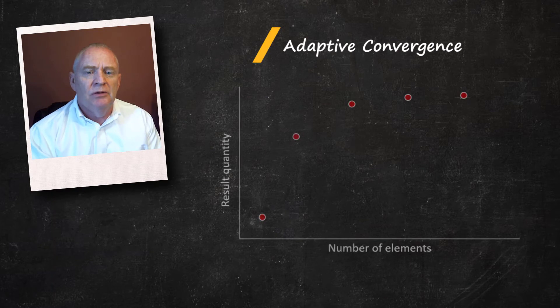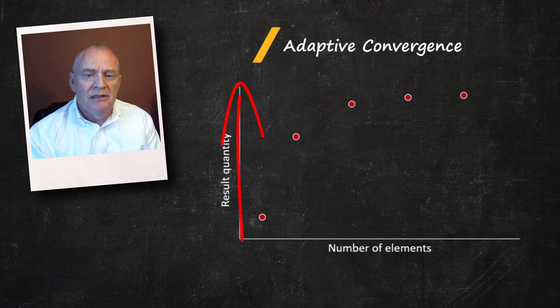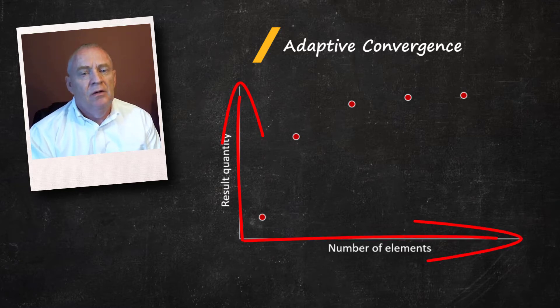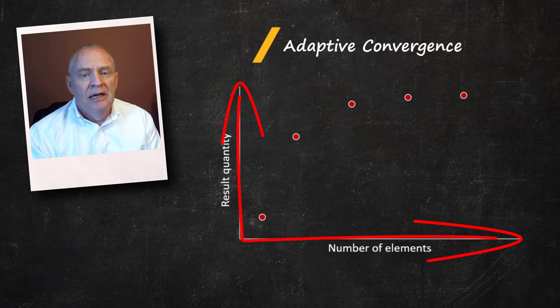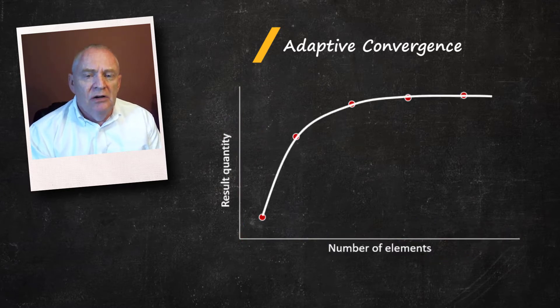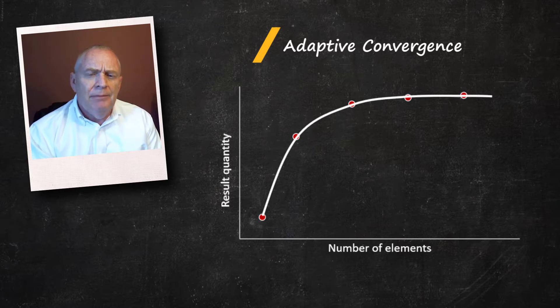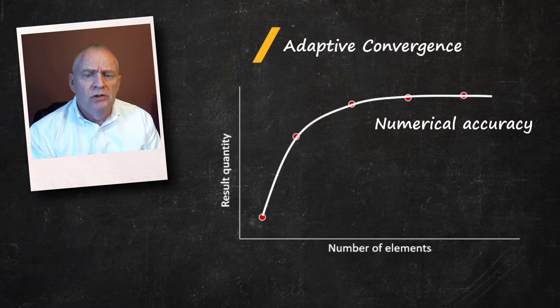First of all, let's introduce the term adaptive convergence for finite element analysis. Adaptive convergence means that the system response, such as stress or deformation, converges to a repeatable solution with decreasing element size for a well-defined model. Hence, the result is no longer changing with further mesh refinement. When adaptive convergence is achieved, this means that the numerical accuracy of the solution is obtained within the limits that you prescribe.